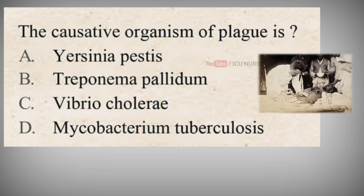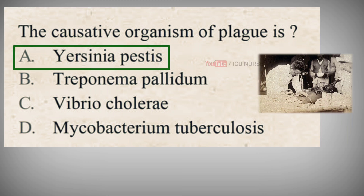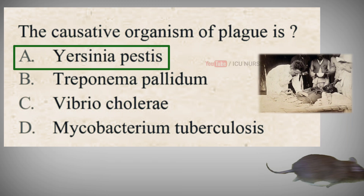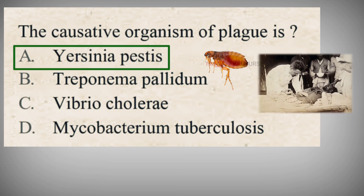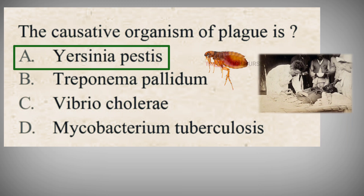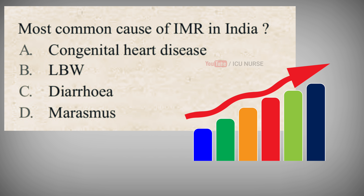The causative organism of plague is? A. Yersinia pestis, B. Treponema pallidum, C. Vibrio cholerae, D. Mycobacterium tuberculosis. The correct answer is A. Yersinia pestis. Plague is an infectious disease that affects animals and humans. It is caused by the bacterium Yersinia pestis, which is found in rodents and their fleas and occurs in many areas of the world.